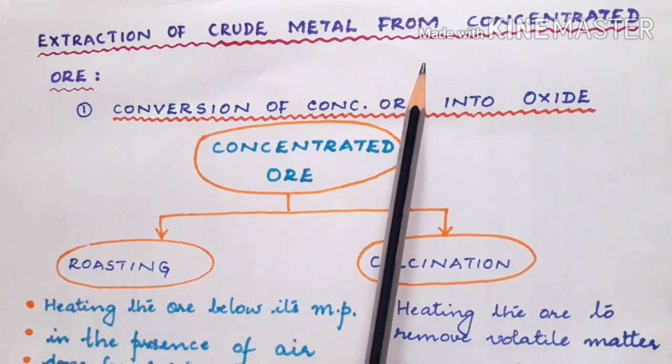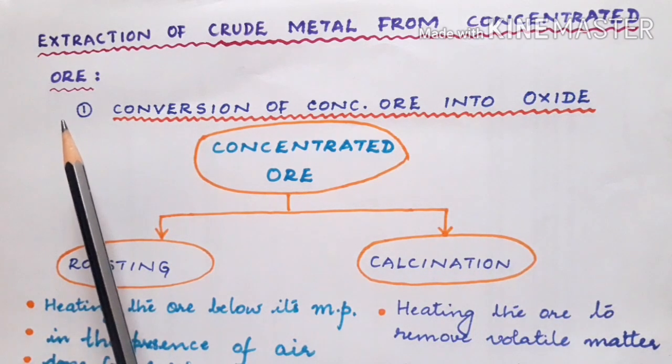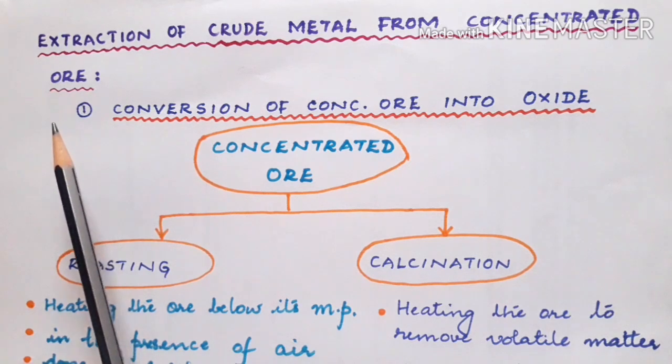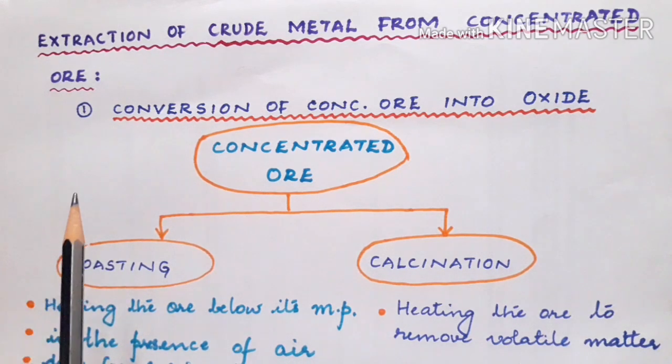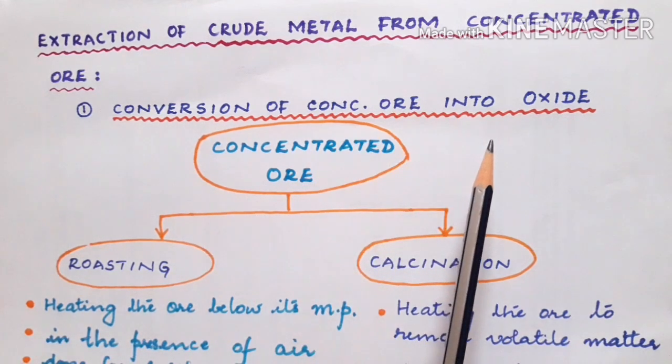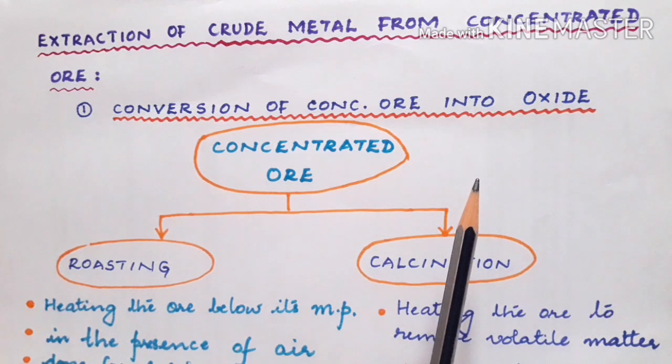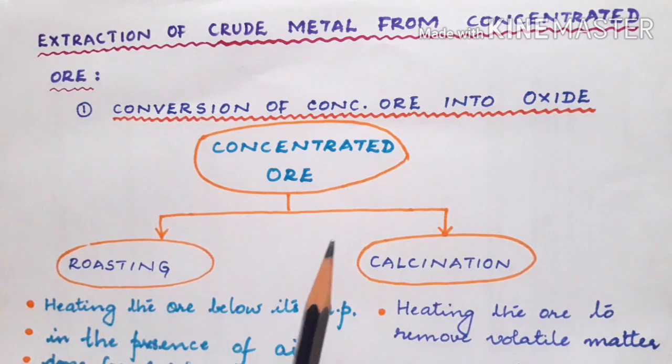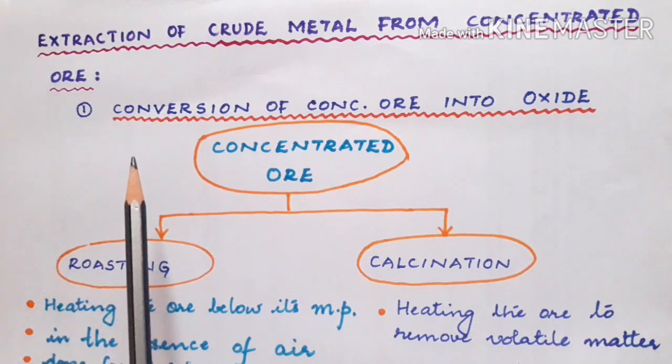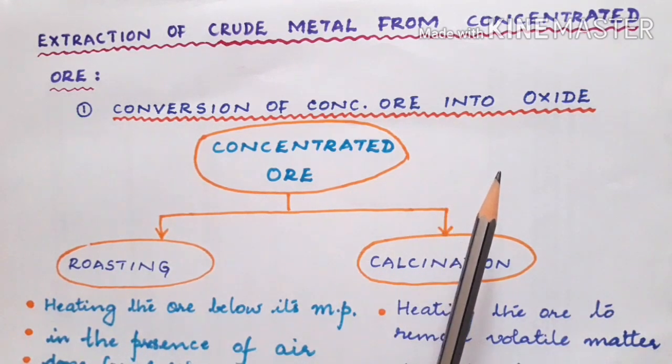In the last class we learned how to concentrate the ore. Now the concentrated ore is subjected to two different steps. First step is conversion of the concentrated ore into its oxide, and the second step is reduction of the ore into its crude form.